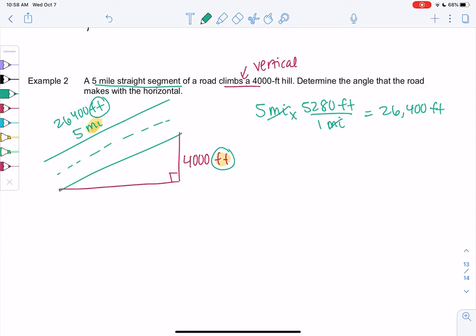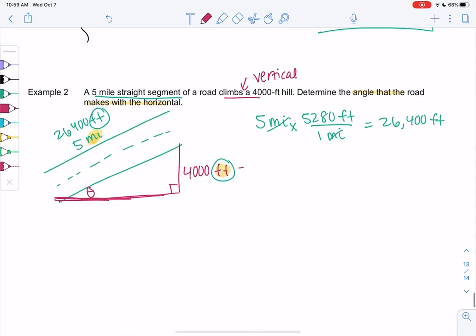And then we want to know the angle the road makes with the horizontal. So what angle? What's basically, it's kind of like the steepness of the road. What angle is it making? So in this case, I'm probably going to use probably sine because I have opposite and hypotenuse. I'm going to use the ones with the same units.